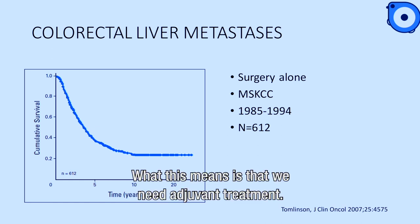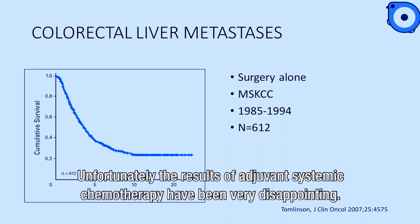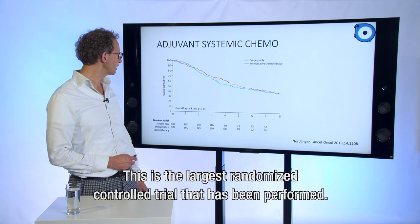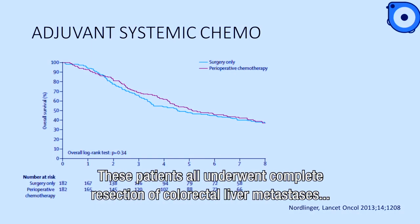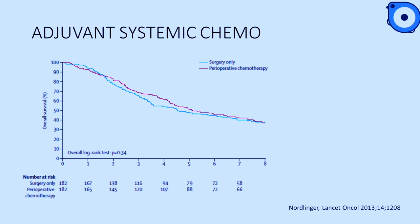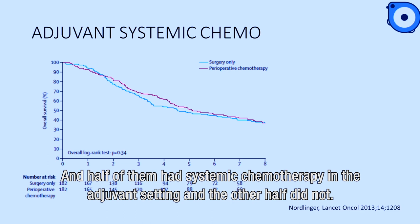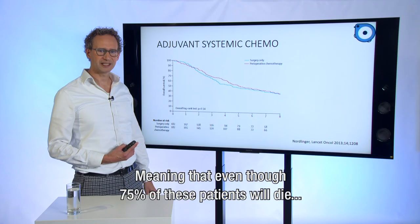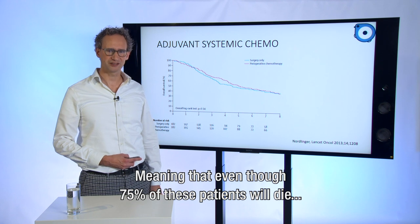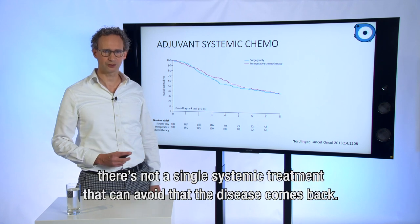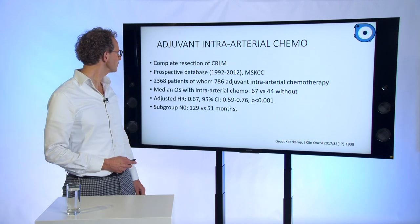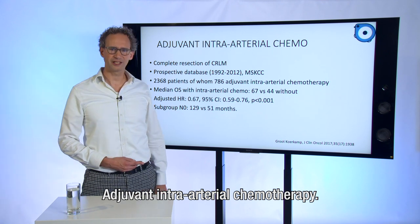This means we need adjuvant treatment. Unfortunately, the results of adjuvant systemic chemotherapy have been very disappointing. This is the largest randomized control trial that has been performed — all patients underwent a complete resection of colorectal liver metastasis, half had systemic chemotherapy in the adjuvant setting and the other half did not. As you can see, the survival curves are overlapping, meaning that even though eventually 75% of these patients will die, there's not a single systemic treatment that can prevent the disease from coming back.